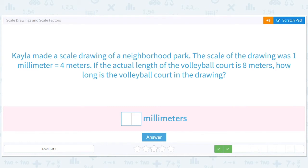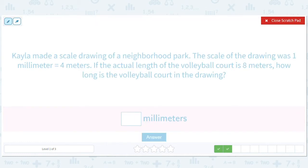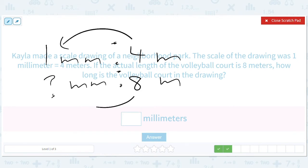I'm just going to look at the pertinent information. The scale of the drawing was one millimeter to four meters. The length of the volleyball court is eight meters. So what's this going to be? You have to divide by four. Divide by four. And it should be two millimeters because eight divided by four is two.